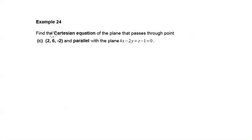In this example, we are going to find the Cartesian equation of the plane that passes through point C (2, 6, -2) and parallel with the plane 4x-2y plus z-1 equals to 0.